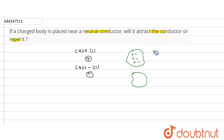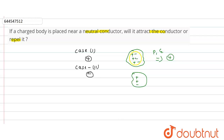In the conductor, positive and negative charges are present due to protons and electrons. Now in case one, the charge body is positive. So the positive charges in the conductor will be repelled by this positive charge body.